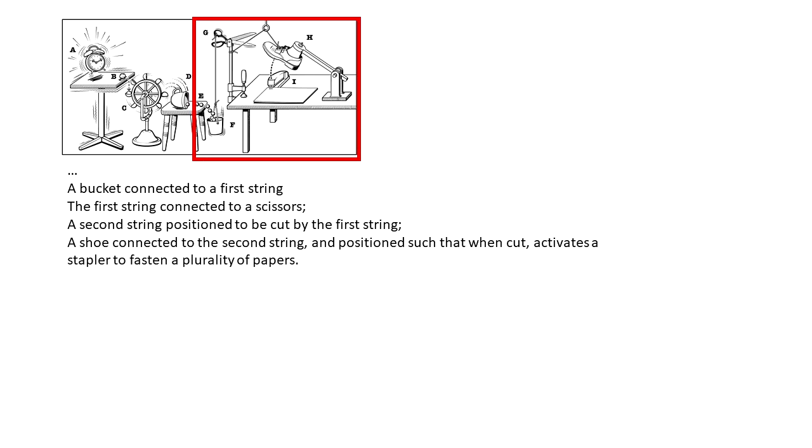Our structural claim recited the elements including all those shown in the red square. Now let's see what a means plus function claim for the same device might look like.